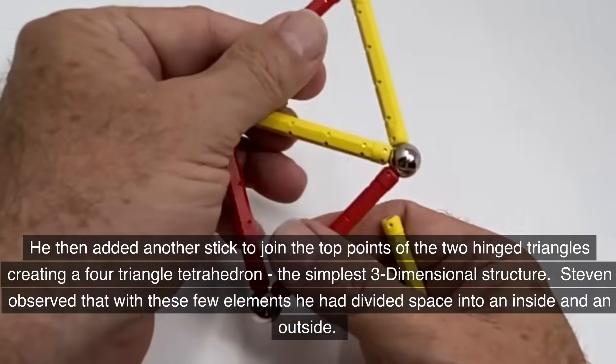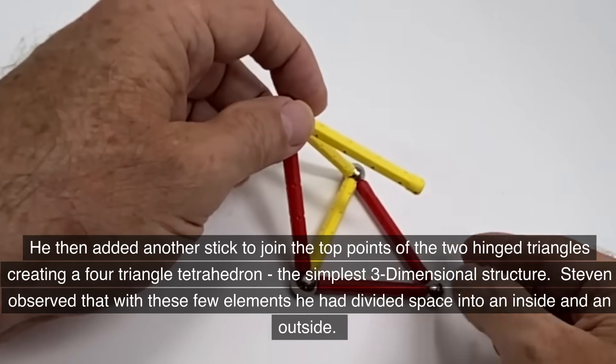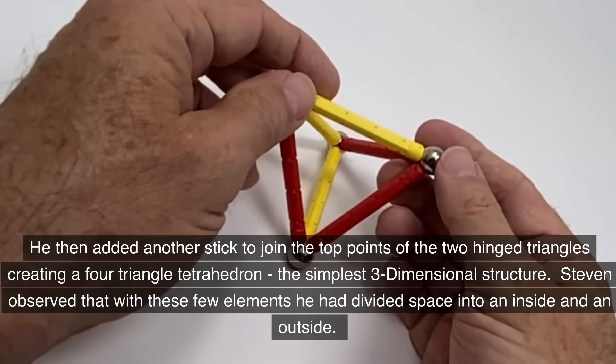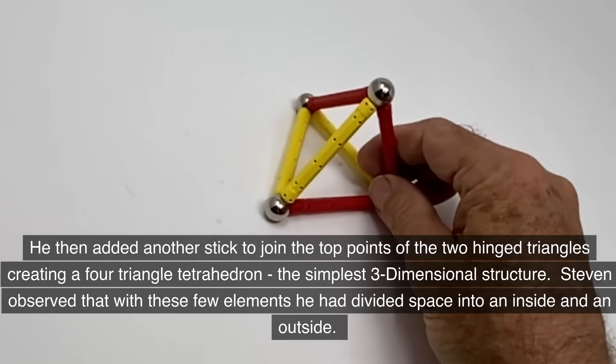He then added another stick to join the top points of the two hinged triangles, creating a four-triangle tetrahedron, the simplest three-dimensional structure. Stephen observed that with these few elements he had divided space into an inside and an outside.